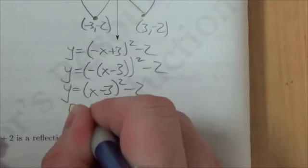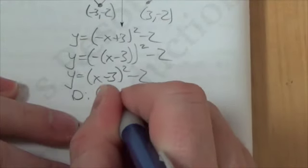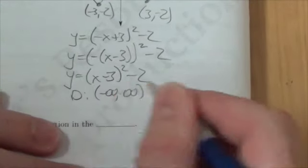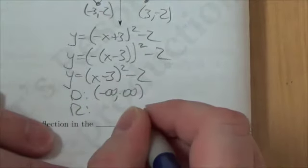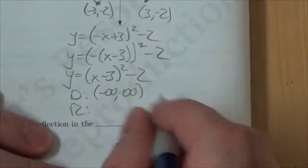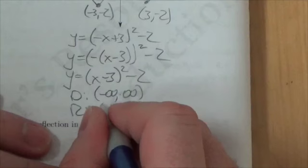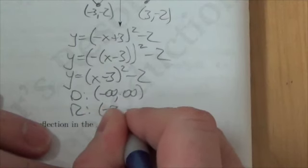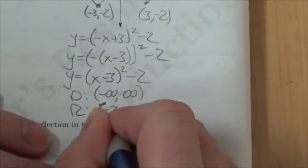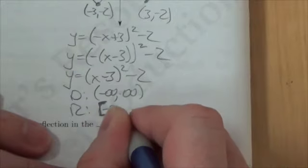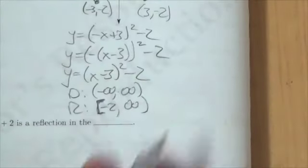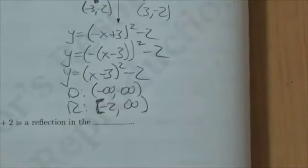The domain is going to be all reals, so we'll write negative infinity out to positive infinity. The range here, well actually the transformation won't affect that. This is still going to be down to negative 2, and I should put hard brackets on that, out to positive infinity. And that's the answer we're looking for.